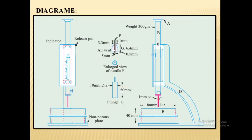Diagram. This is the Vicat apparatus diagram, which has been explained in a previous experiment.